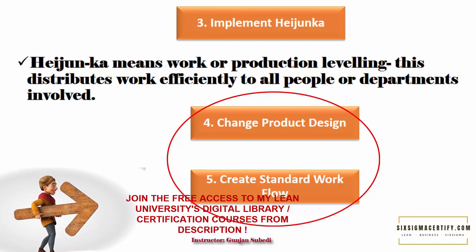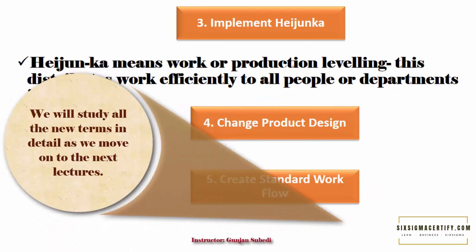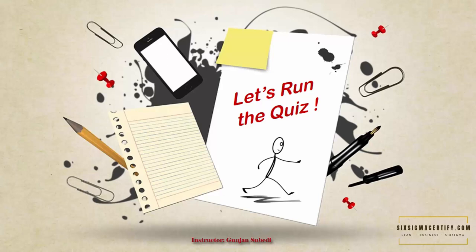You may have encountered some foreign terms like Heijunka, work leveling, and standard workflow in this lecture. These terms may look foreign at the moment — don't worry, we are going to study about these terms in more detail in the course later. So far, we have learned about Muda and Mura. A lot of students get confused with these two terms and also with the term Muri, which we will cover in the next lecture.